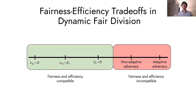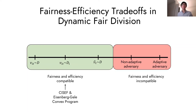For the weaker distributional adversaries, where item values are sampled from distributions, we show that fairness and efficiency under this weaker model is compatible. Along the way, we explore achieving a relaxed version of strong envy-freeness that's compatible with efficiency in a related offline problem. This requires working with properties of the Eisenberg-Gale Convex Program.